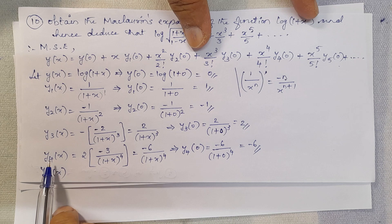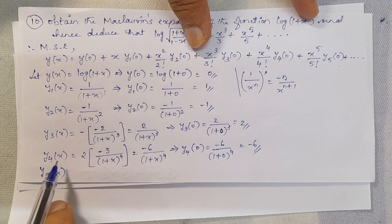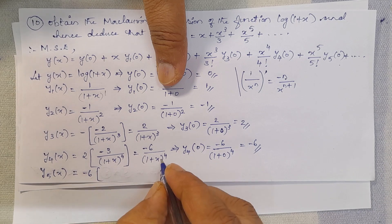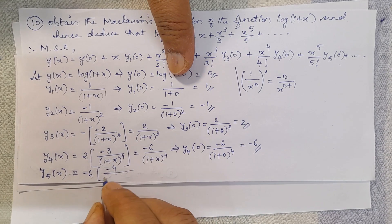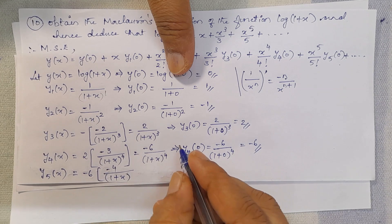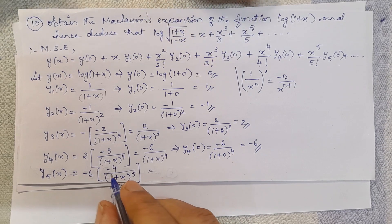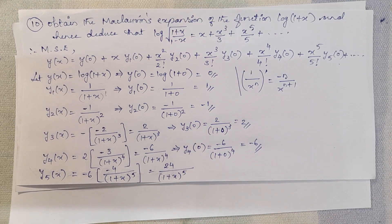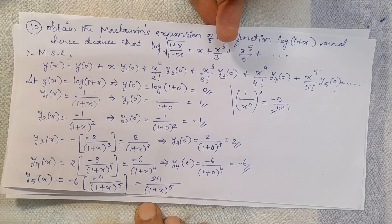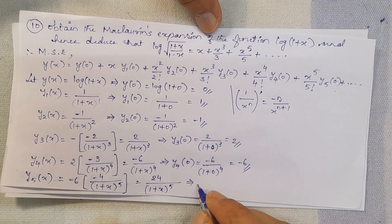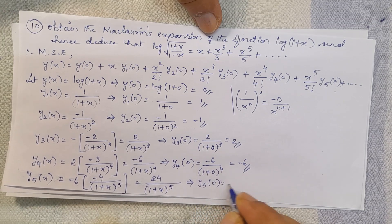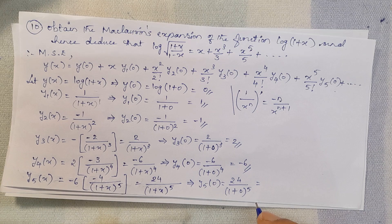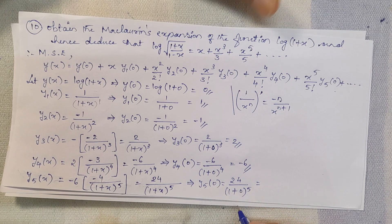Next, find y5(0). y5(x) is the differentiation of y4(x) = -6/(1+x)⁴. Here n = 4, so we get -6·(-4)/(1+x)⁵ = +24/(1+x)⁵. So y5(0) = 24/(1 + 0)⁵ = 24/1 = 24.